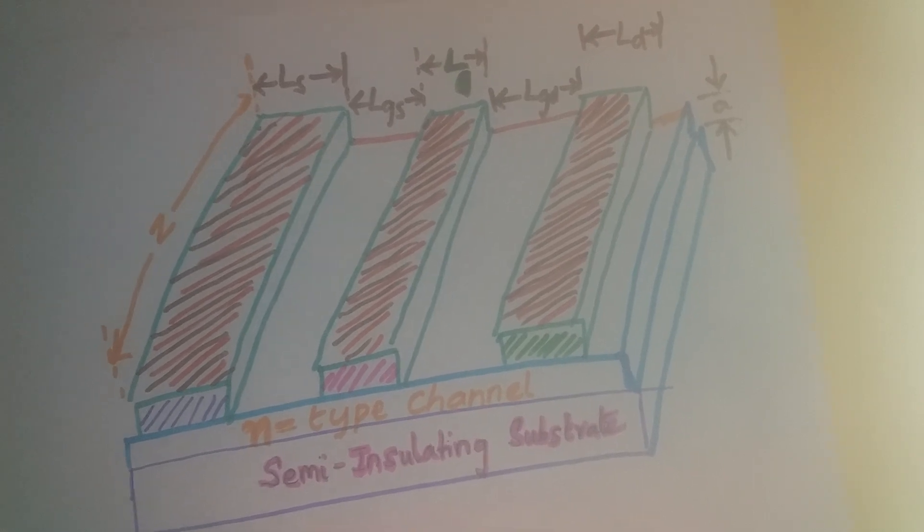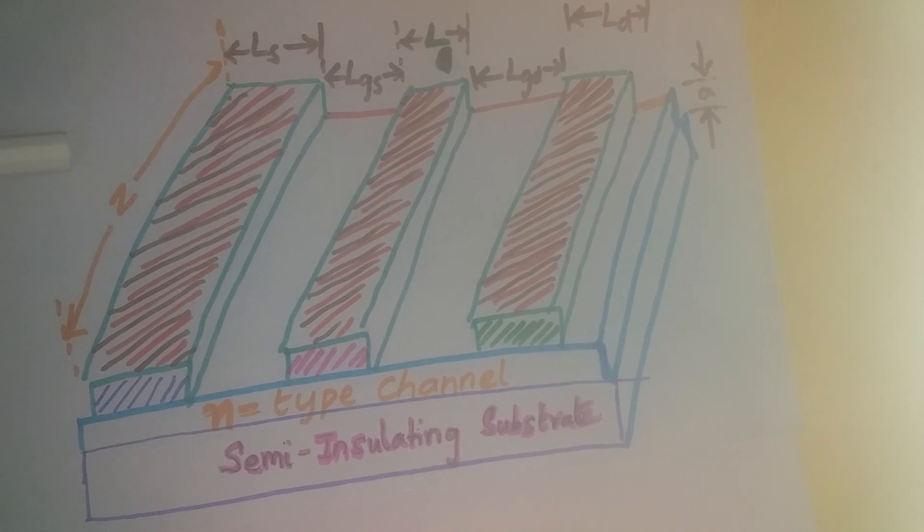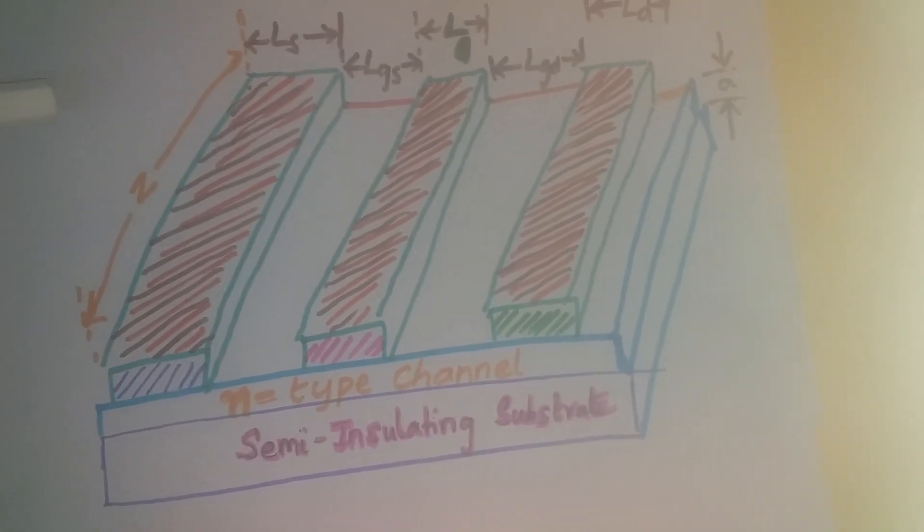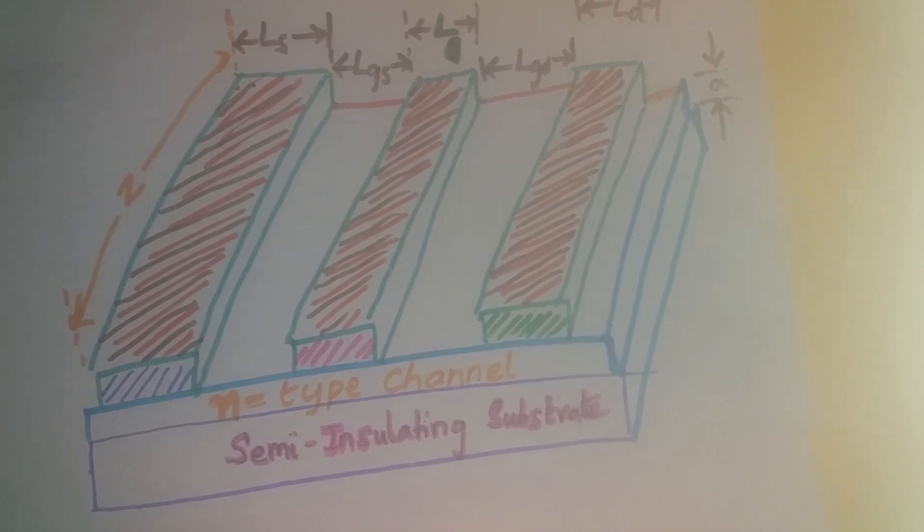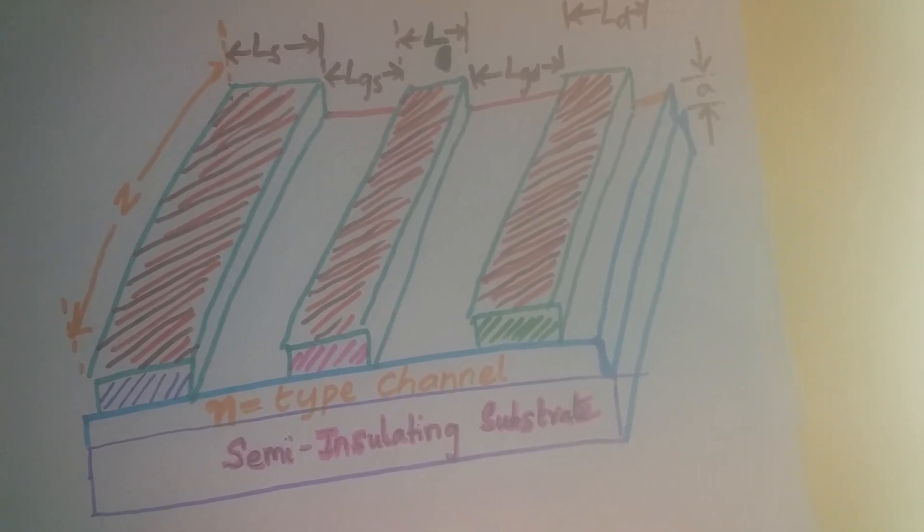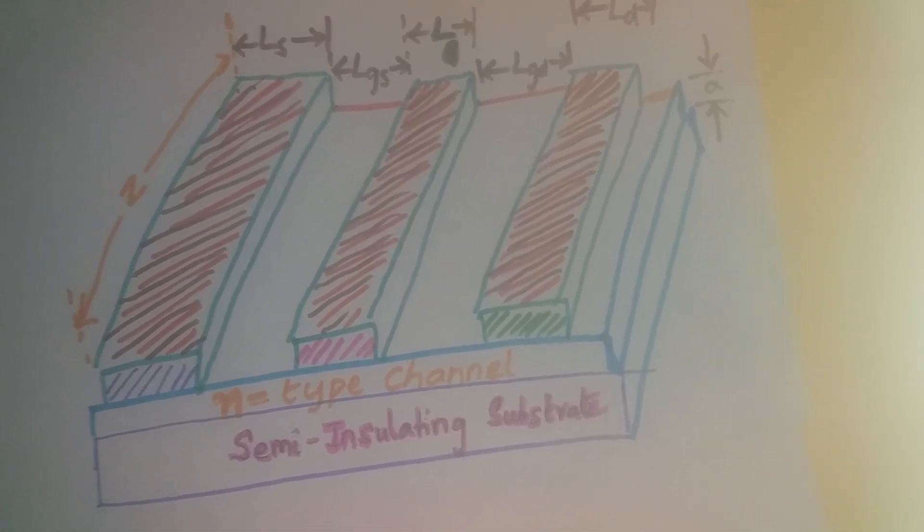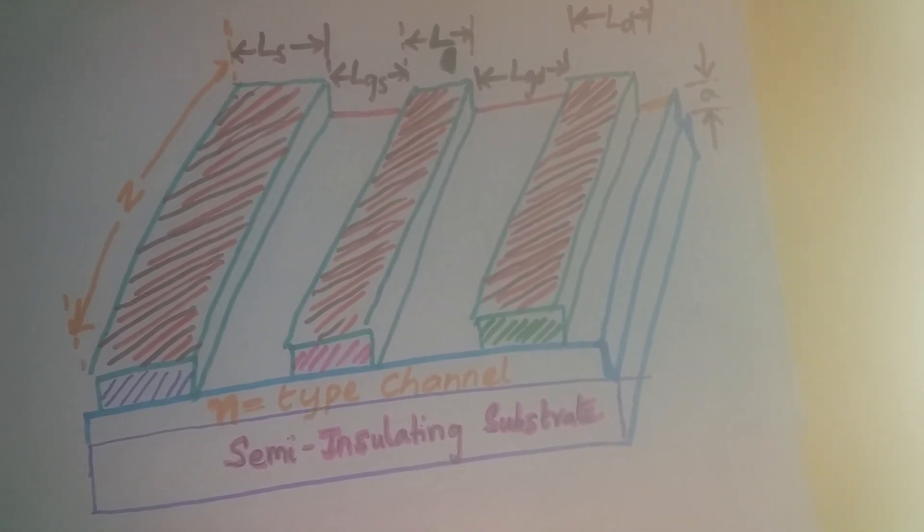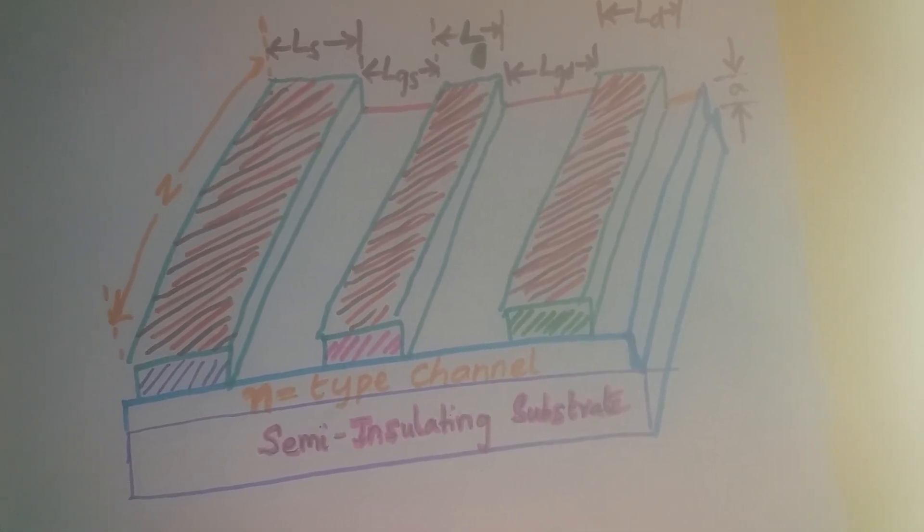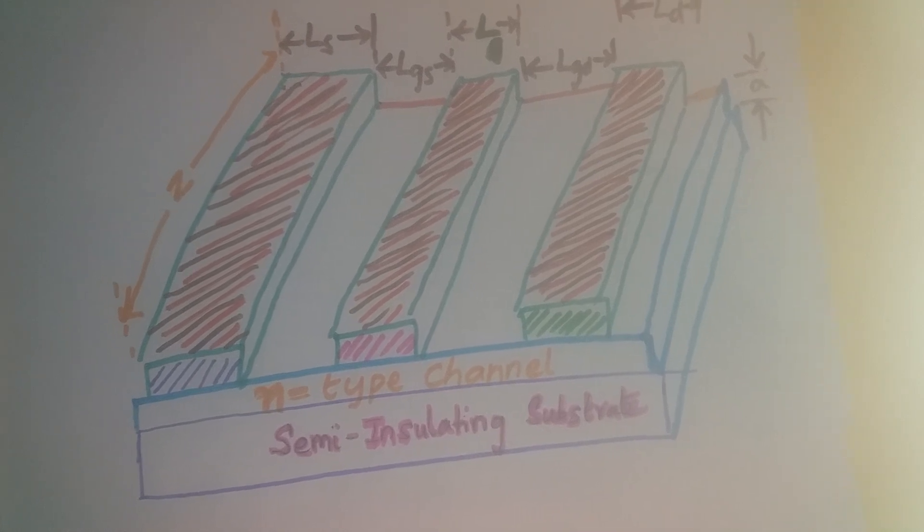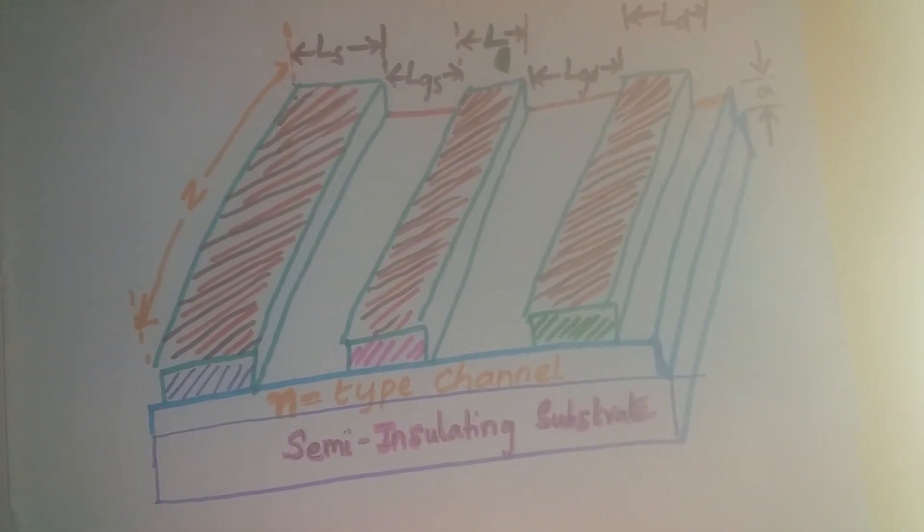Now, another dimension that is very important is gate width. Gate widths are of the order of 100 to 2,000 times of gate length. This gate width determines the amount of current that flows in the device. So higher the gate widths, higher the current. Small gate widths are used for low noise applications and higher gate widths are used for high power applications.